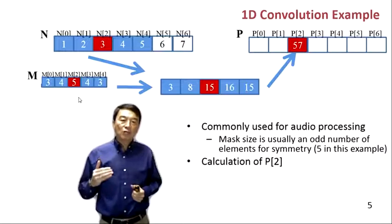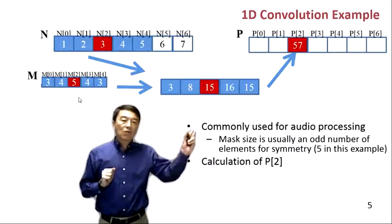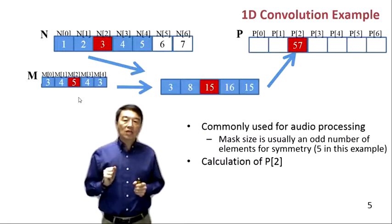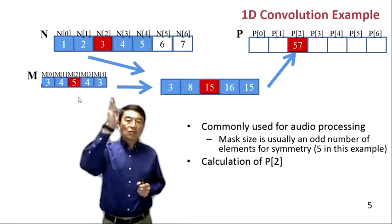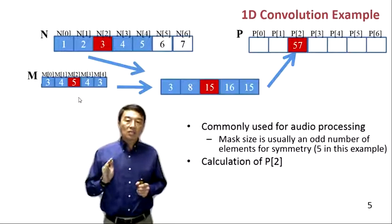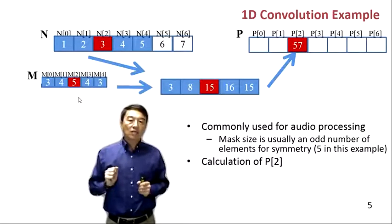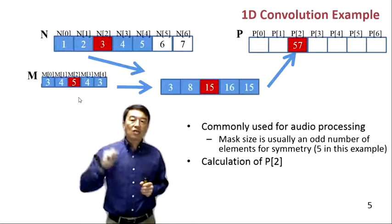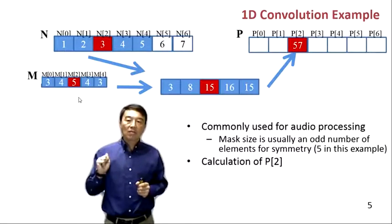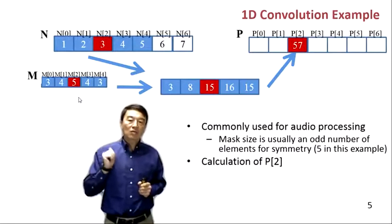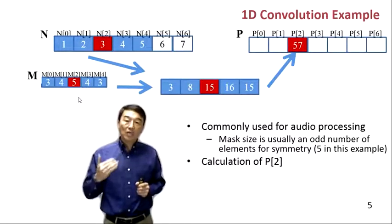Here is a simple example of one-dimensional convolution with a mask of five elements. To calculate one output element, we take its corresponding input element and align the center of the mask to it. In this case, to calculate p2 in the output, the corresponding input is n2, so we align mask element m2 with n2, so that m0 aligns to n0, m1 aligns to n1, and so on. After this alignment we perform pairwise multiplication — that's how we apply the weights.